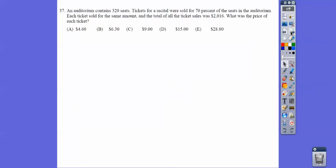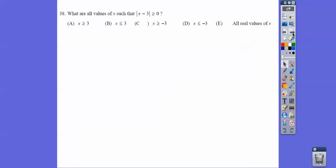An auditorium contains 320 seats. Tickets for a recital were sold for 70% of the seats auditorium. Each ticket is the same amount. The total tickets is $2,016. What was the price of each ticket? So I found 70%, because there were 70% of the seats that were sold, so 224. Then 224 times the seat price equals the revenue, so when you divide by 224, you get 9.